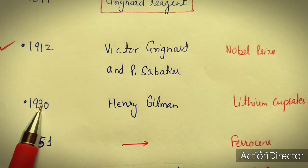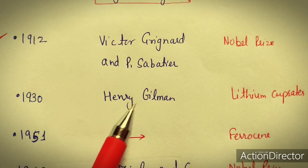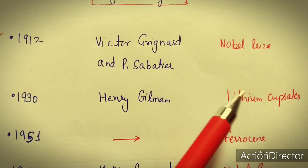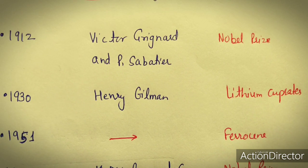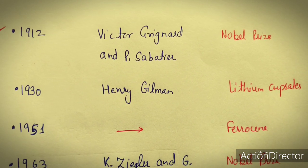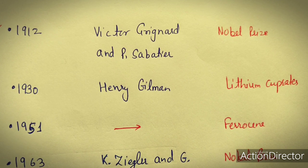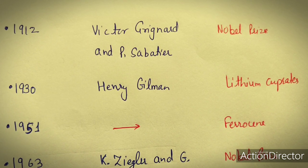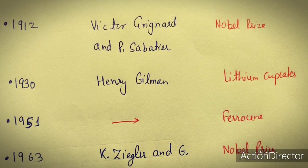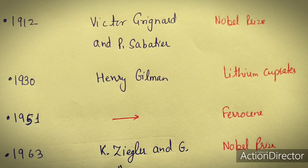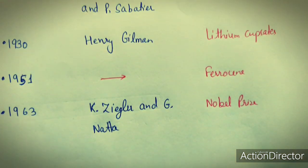Then in 1930, Henry Gilman synthesized lithium cuprates, which are very important synthetic compounds. These lithium cuprates have been used in synthetic chemistry to synthesize a series of organic compounds.